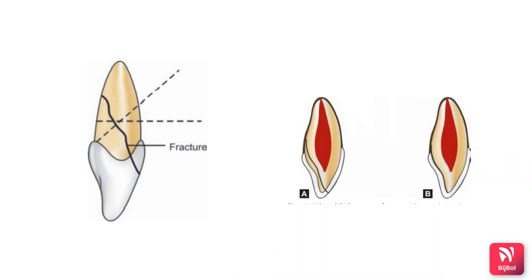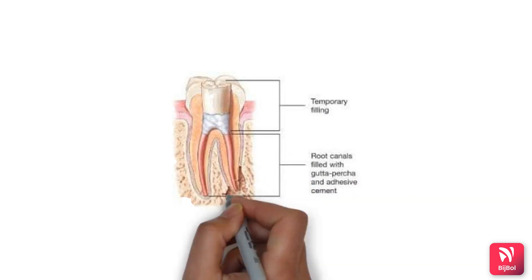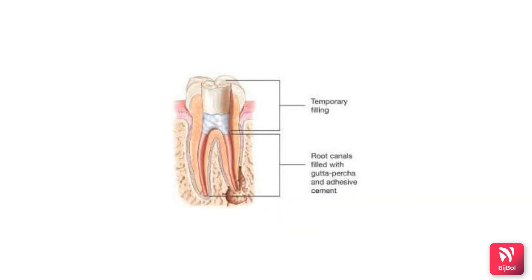If there is no pulp exposure, the fragment can be treated by bonding alone, or by removal of the coronal tooth structure and restoring with composite. If pulp exposure has occurred, pulpotomy or root canal therapy is indicated. When the remaining tooth structure is adequate for retention, endodontic therapy and crown restoration are possible with crown lengthening procedures.